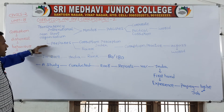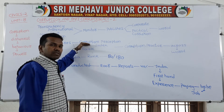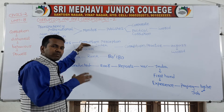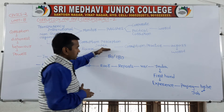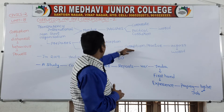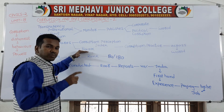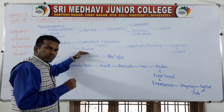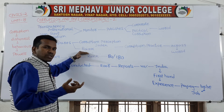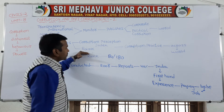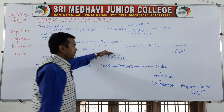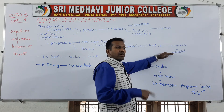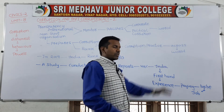These non-government organizations prepare an index called the Corruption Perception Index. According to this index, ranks are published indicating which countries have the highest level of corruption and which countries have the lowest or no corruption. This Corruption Perception Index covers countries from all over the world.